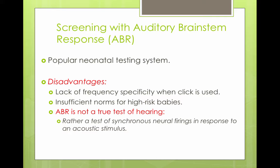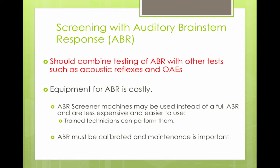Popular tools for neonatal testing include screening with the auditory brainstem response, the ABR. The disadvantages of the ABR are that it lacks frequency specificity when a click is used. We don't have norms on high-risk babies, and the ABR is not a true test of hearing — it's a test of synchronous neural firings in response to acoustic stimuli. But it's really the best we can do for infants, because it's objective; the infant doesn't need to be involved. ABR is costly, but there's really no downside to using it. It's a wonderful test.